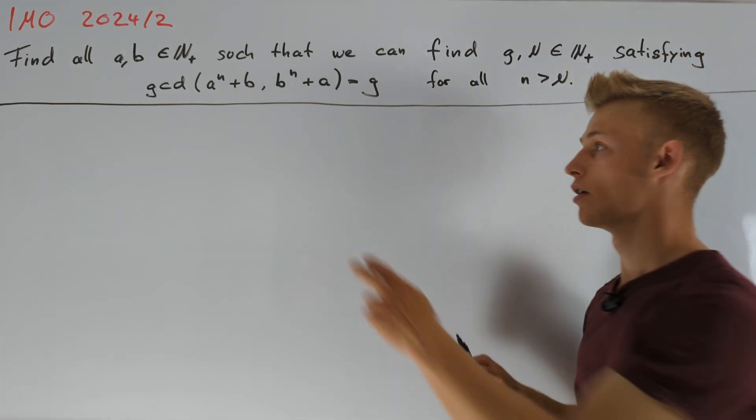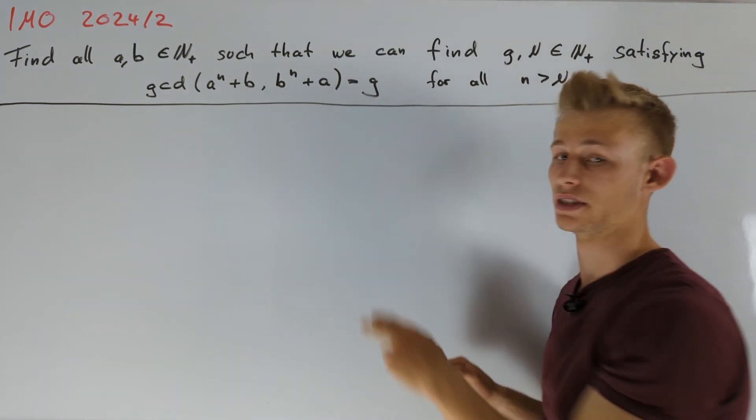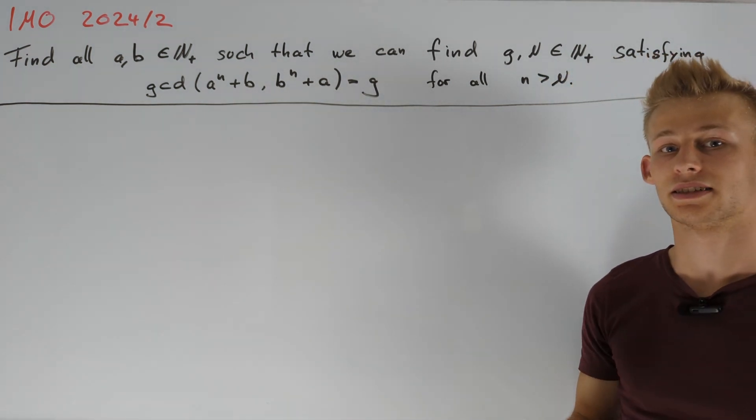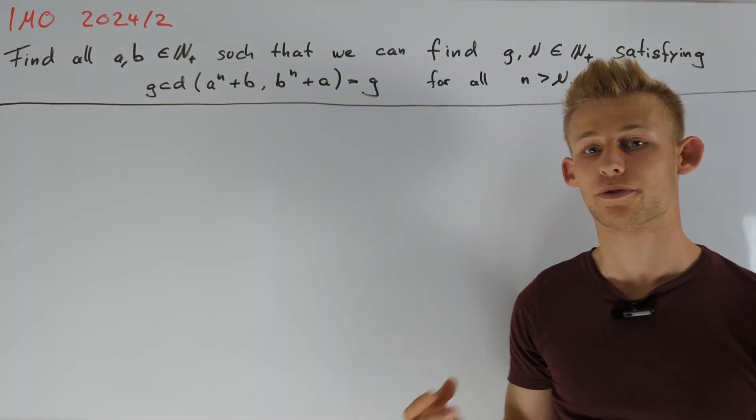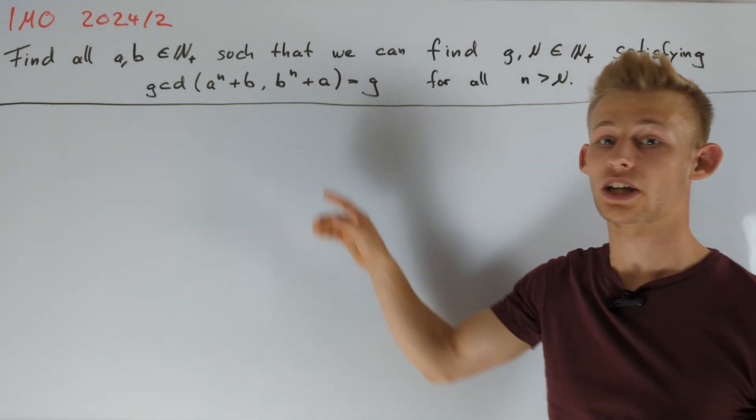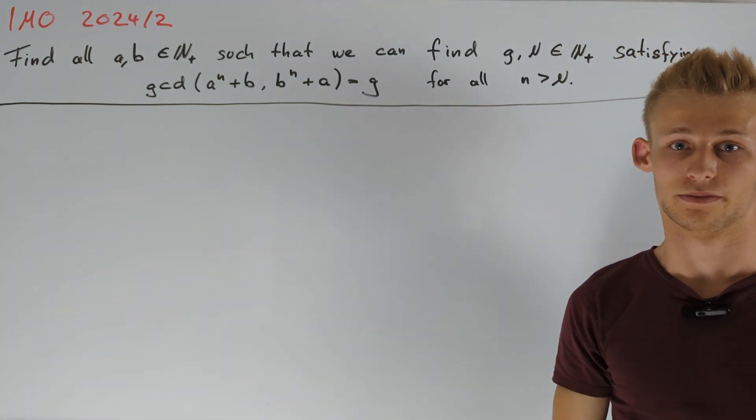We are interested in prime divisors of both these two numbers here. And we already have the trivial ones, namely the divisors of the GCD of a and b. But now we want to find out if we can find more common prime divisors of these two numbers not dividing a or b.